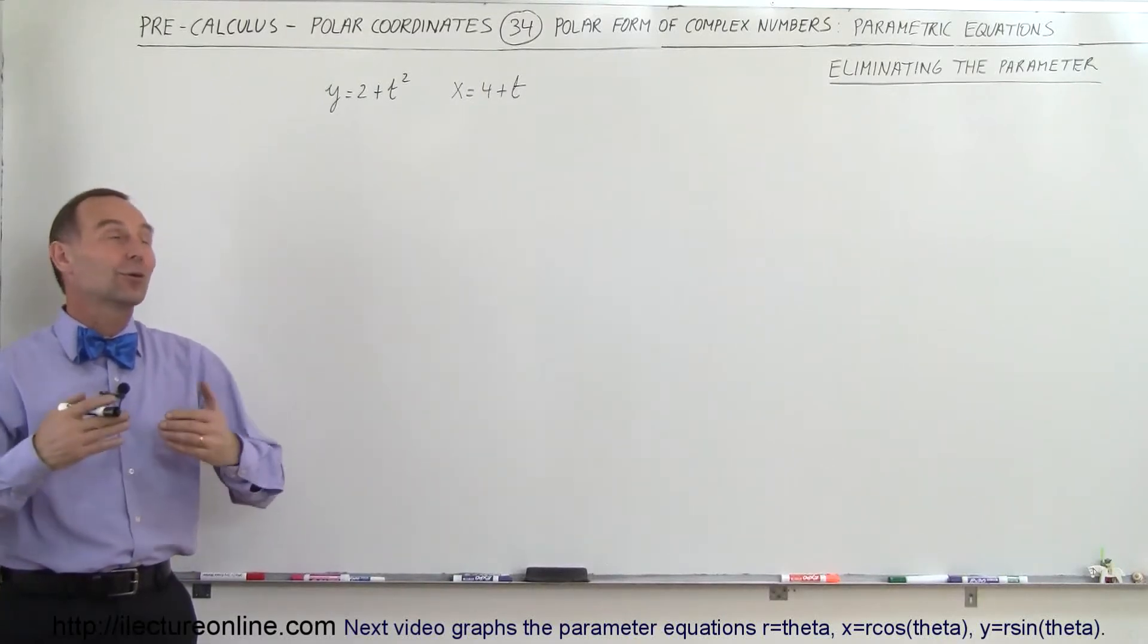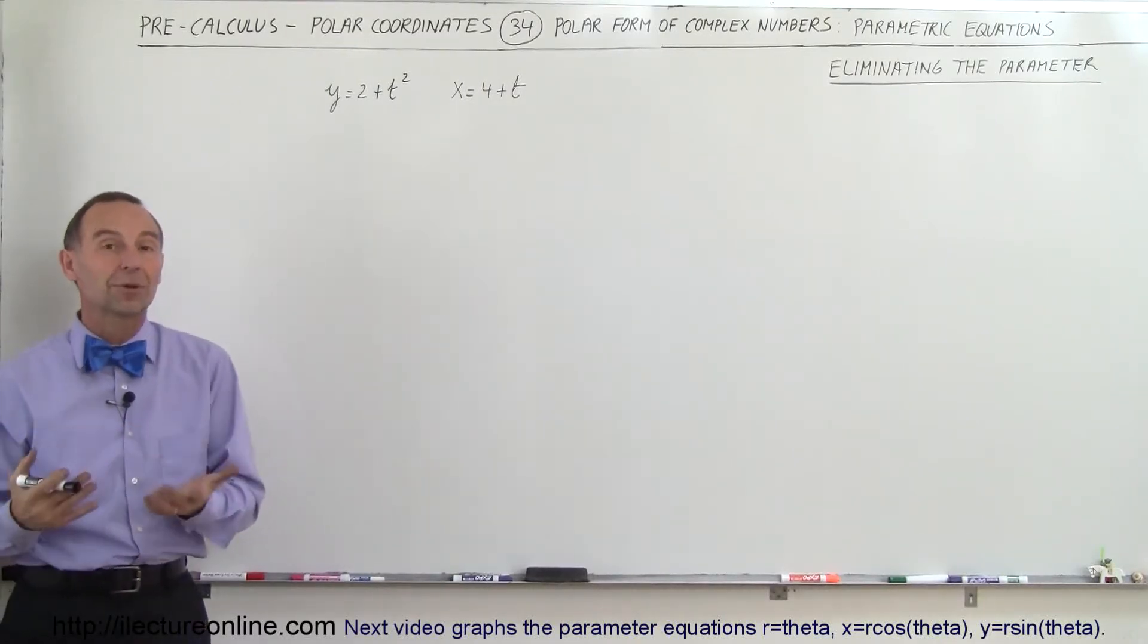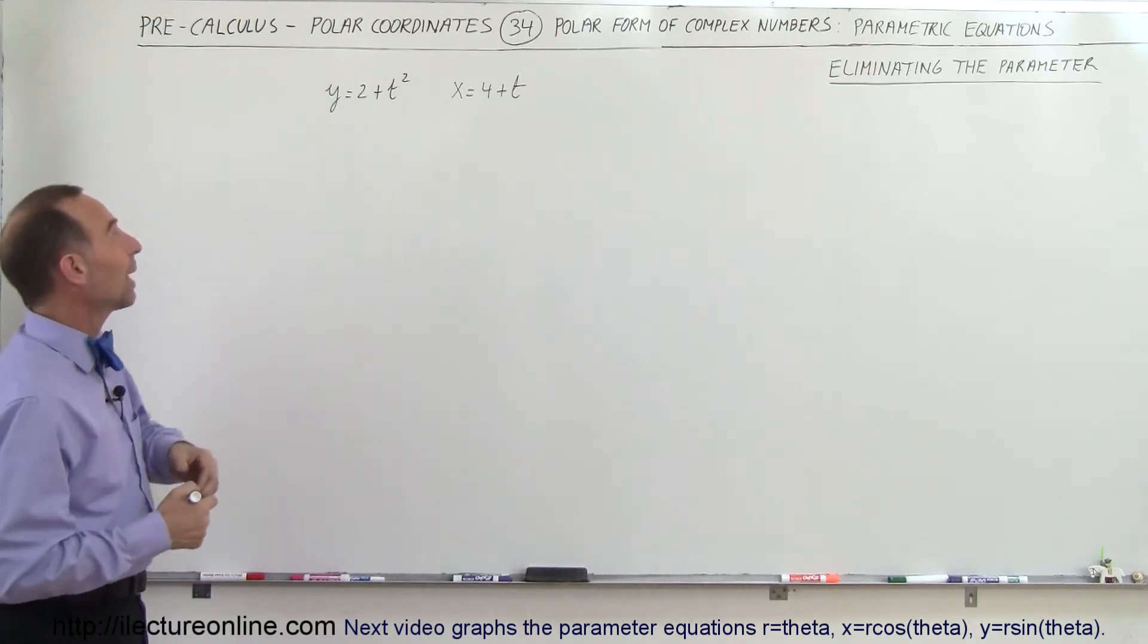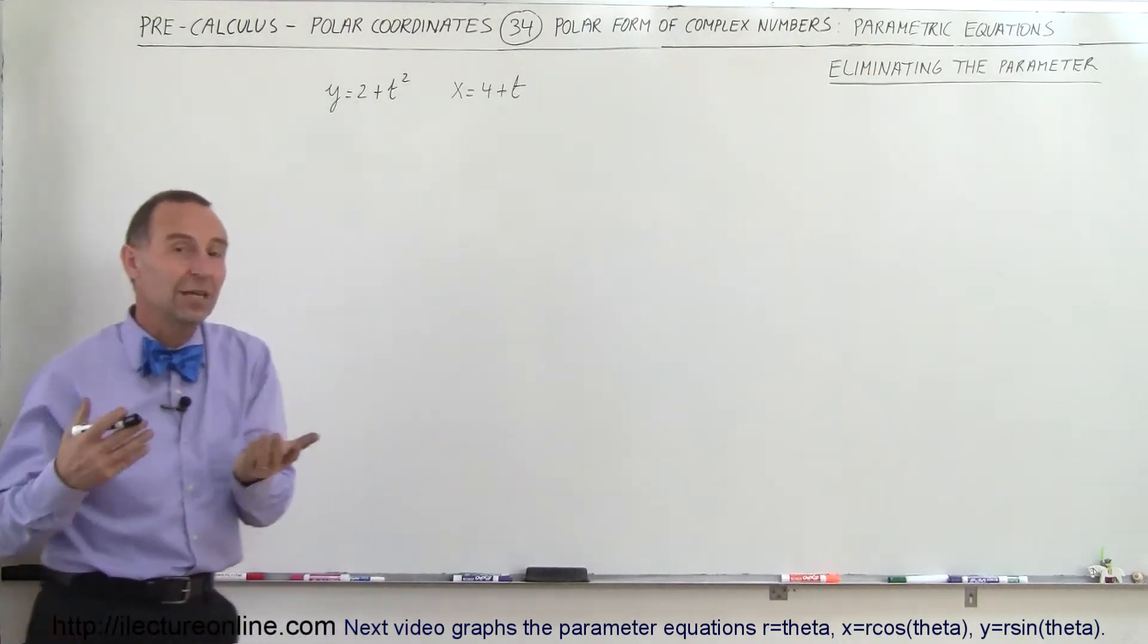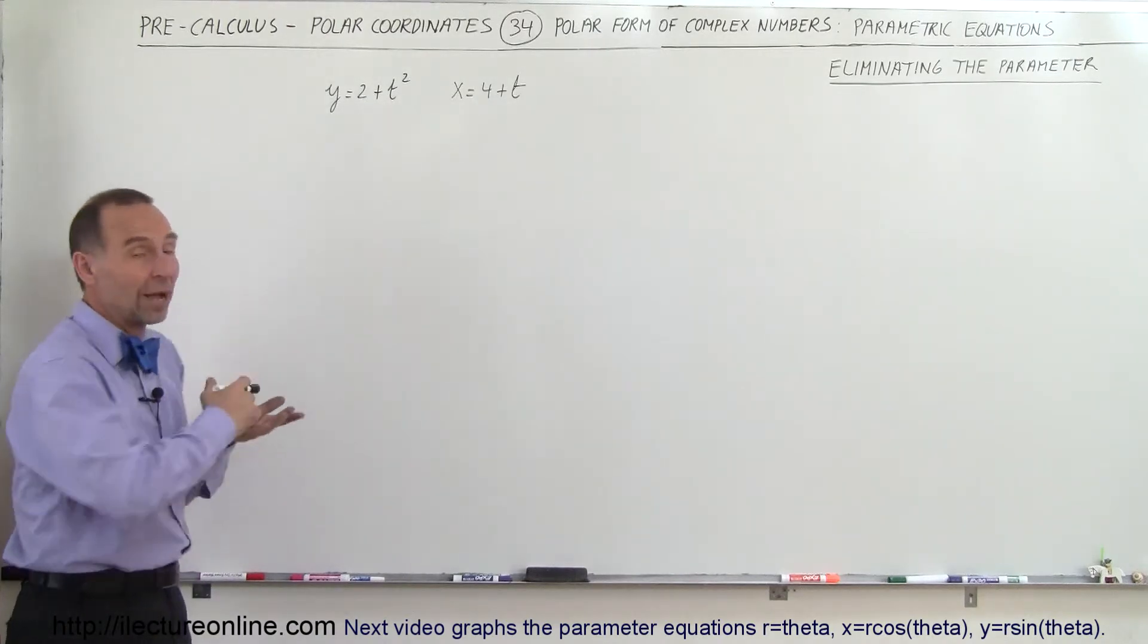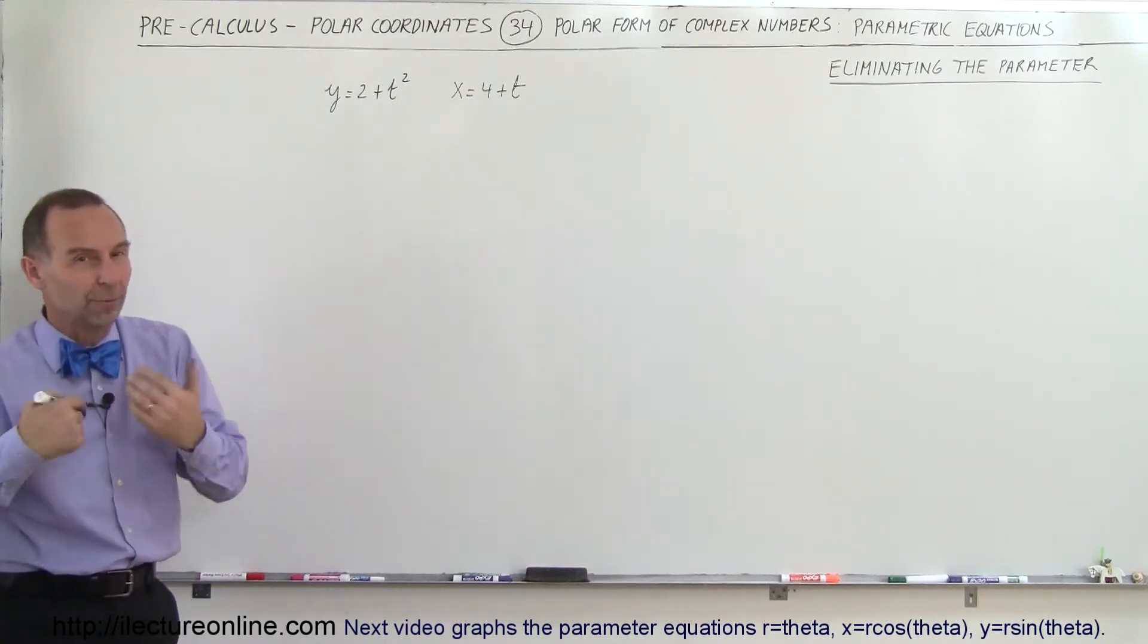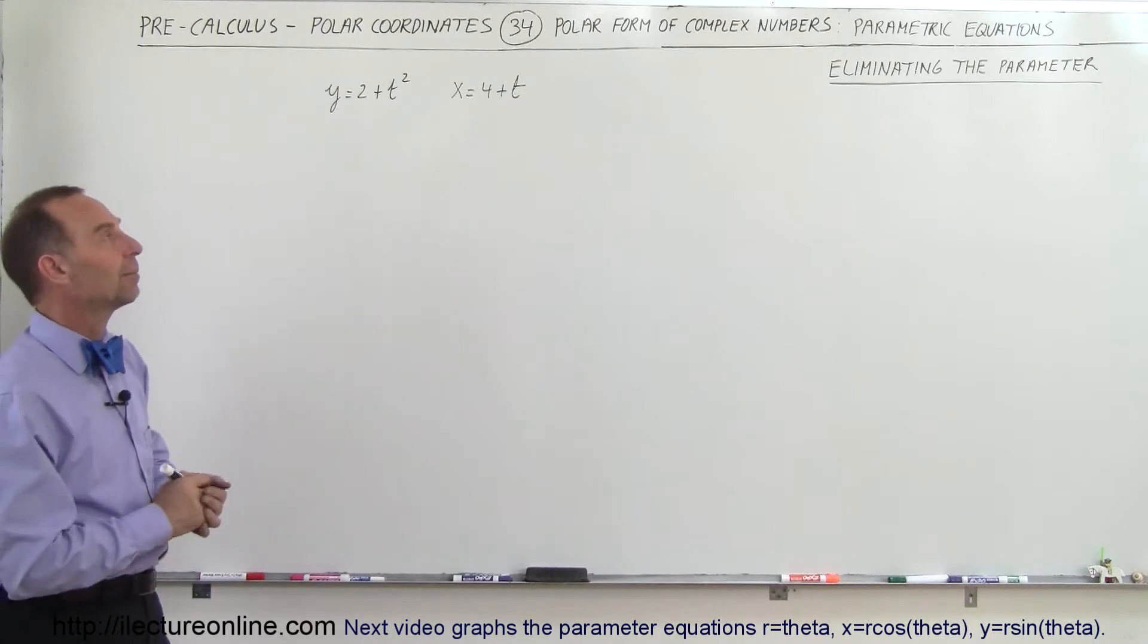Welcome to ElectronLine. We're going to learn how to eliminate the parameter. In this case, t is the parameter, so we have y in terms of t and x in terms of t. Of course, t can represent time, and x and y can represent the x and y coordinates of a particle as a function of time.